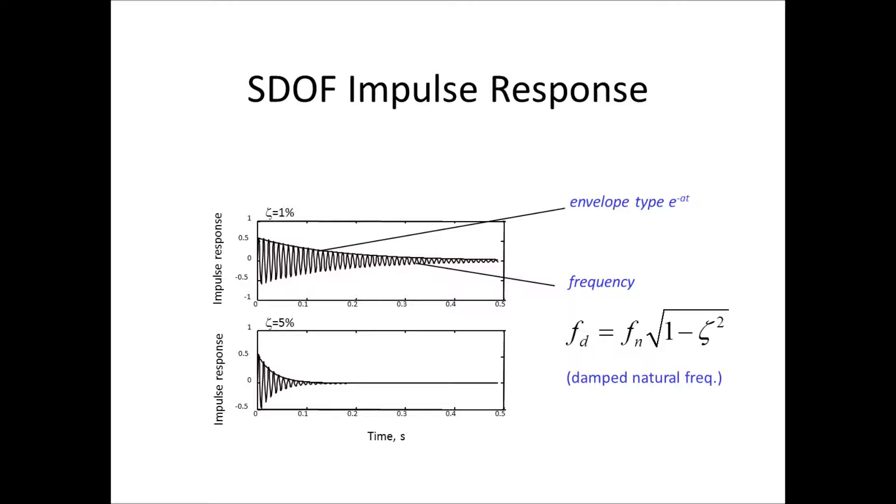Zeta equals 1% in the top and 5% in the bottom plot. Now, the envelope, the exponential decay, is of type e to minus at, where we know that a contains the damping zeta and the natural frequency omega n.